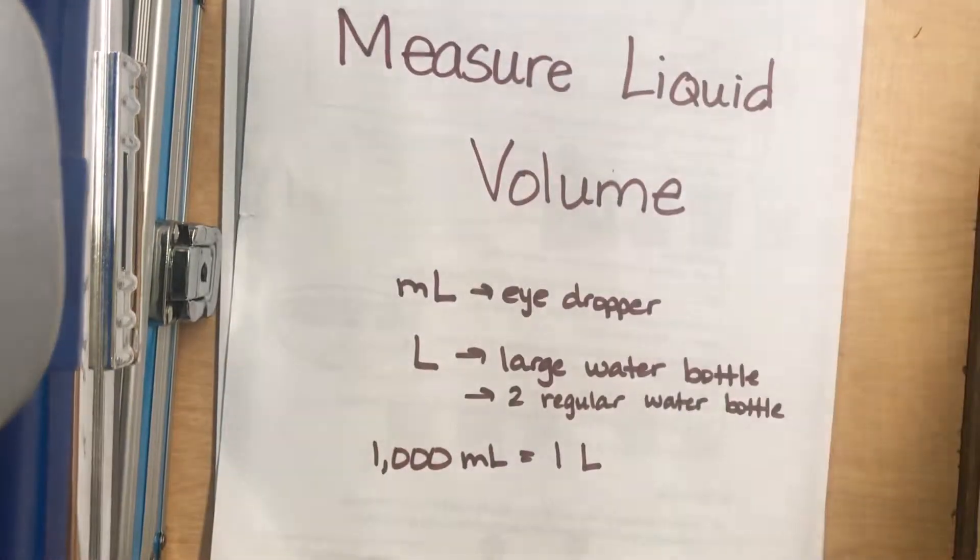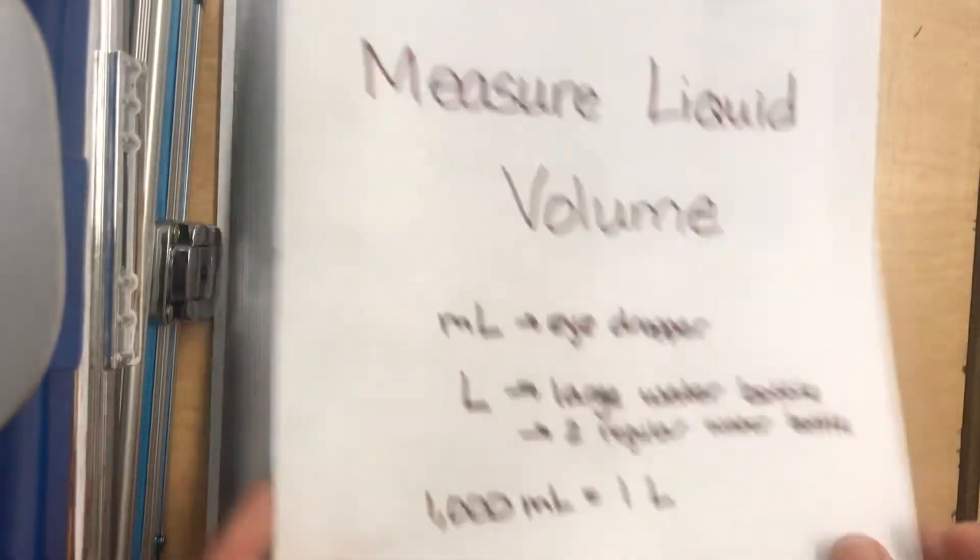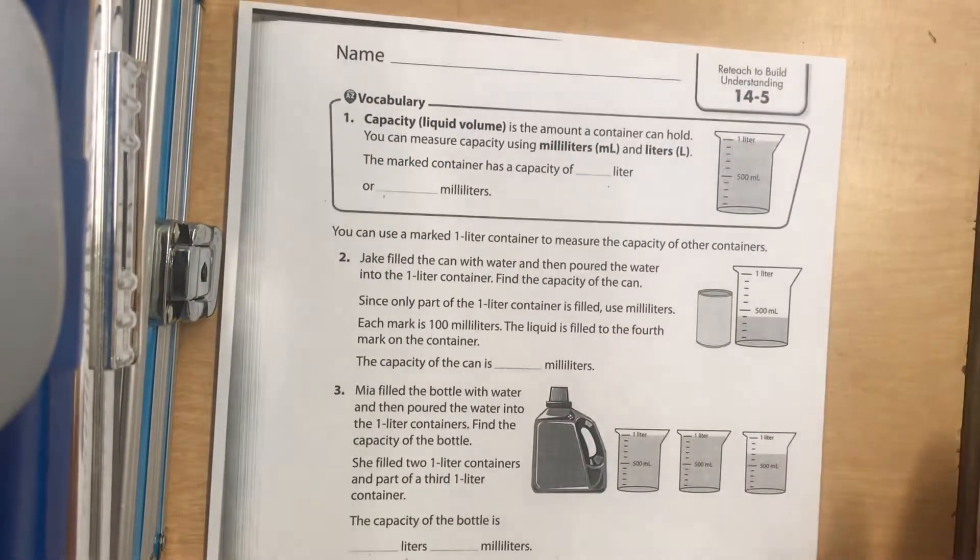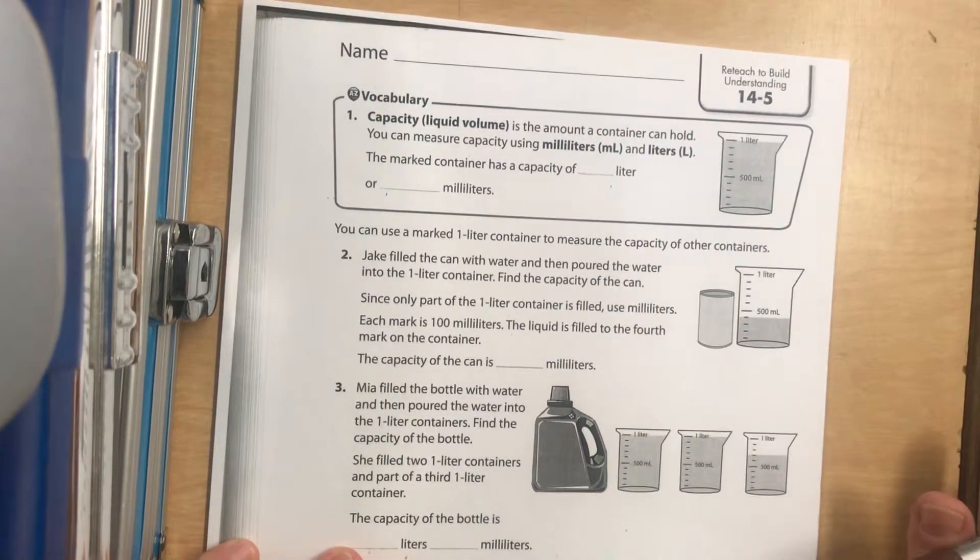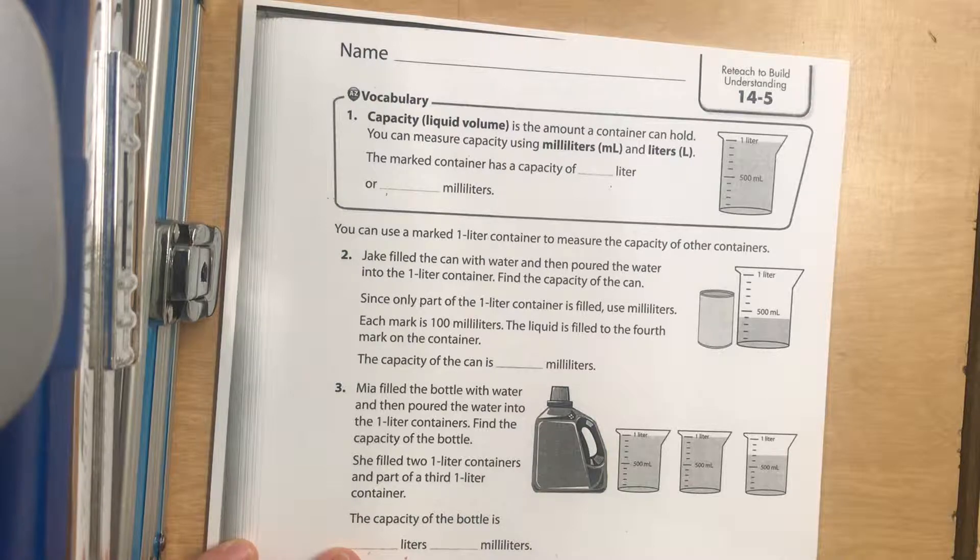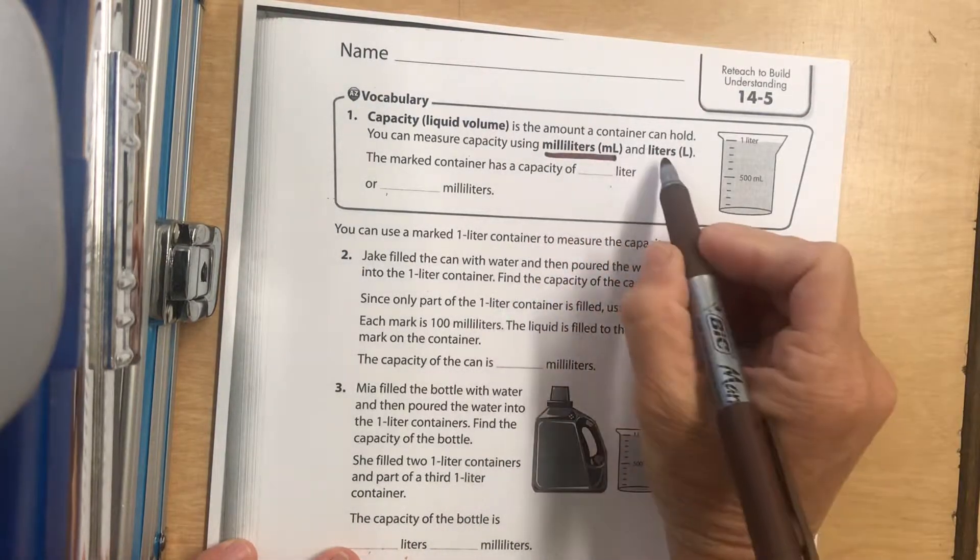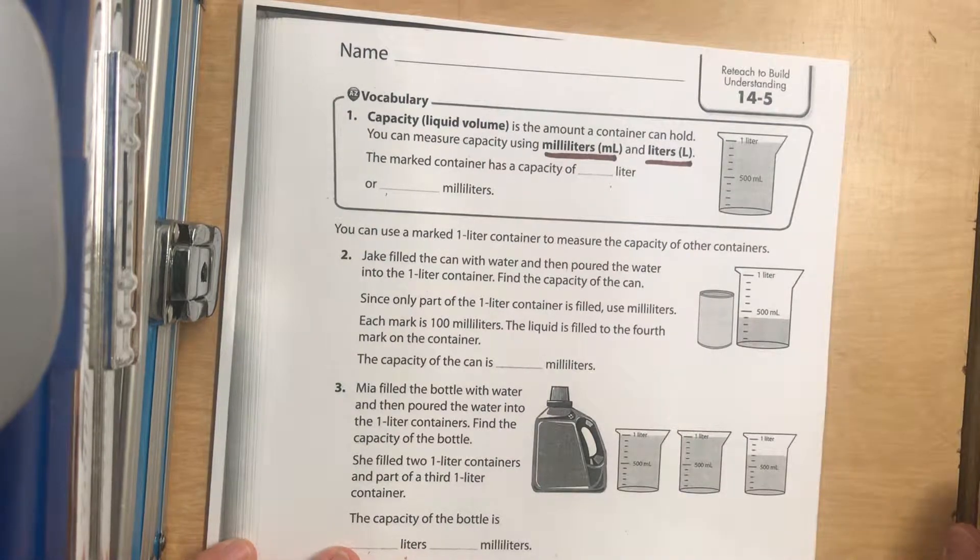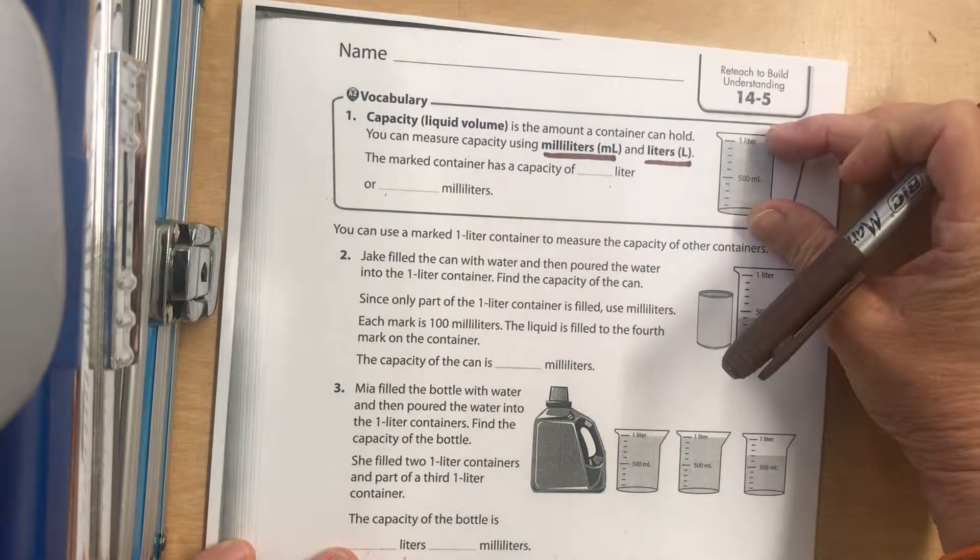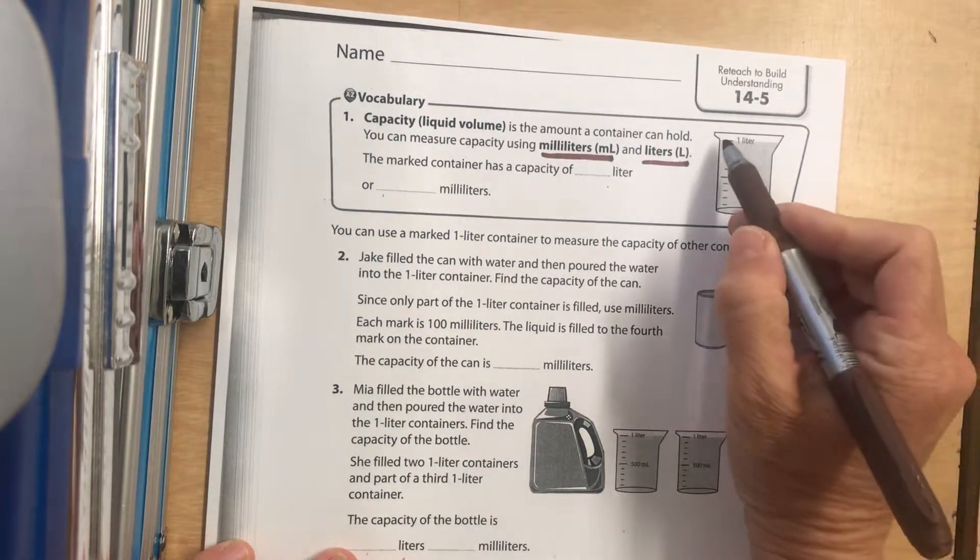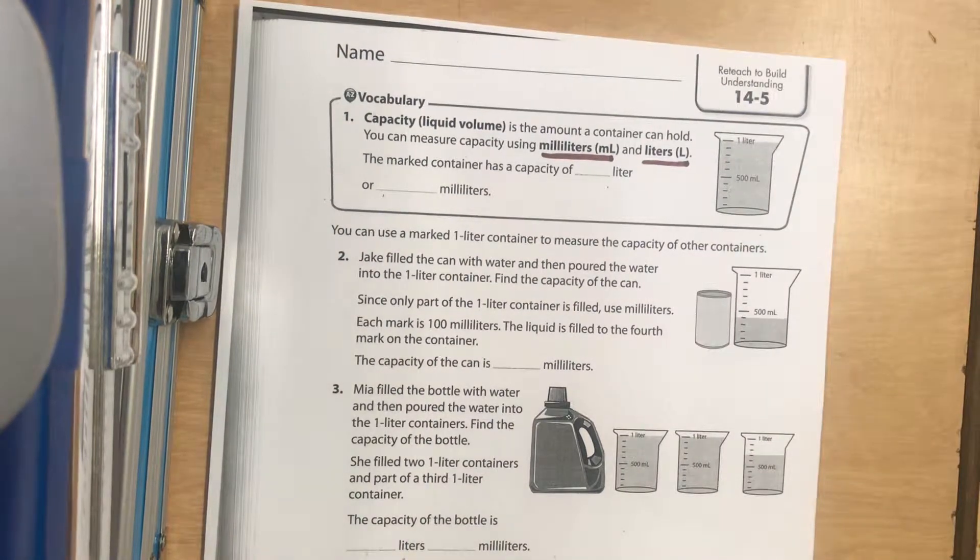Capacity, or liquid volume, is the amount a container can hold. You can measure capacity using milliliters and liters. The marked container shown here is like a measuring cup.